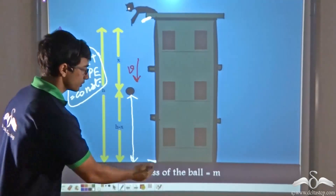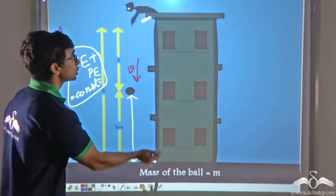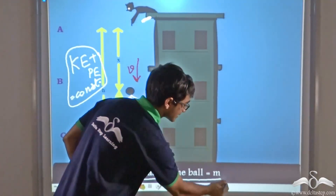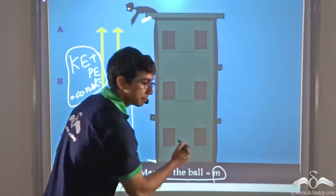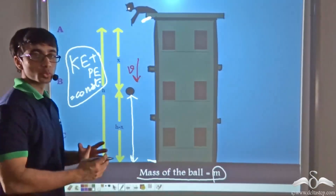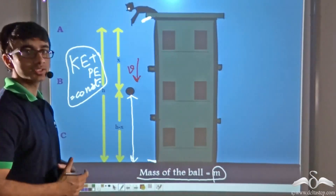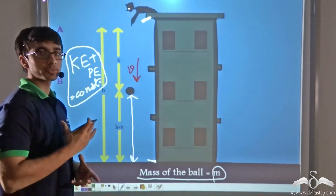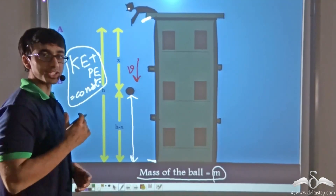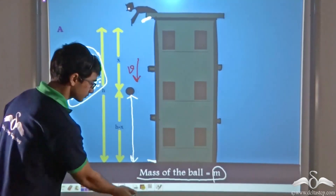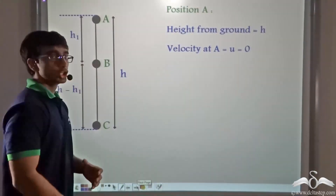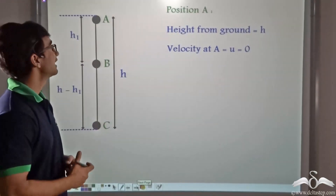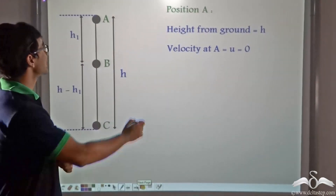And the mass of the ball is M. So with this information, let us see how we can proceed to prove the law of conservation of energy. So initially we consider position A. At position A — that is the top of the building —